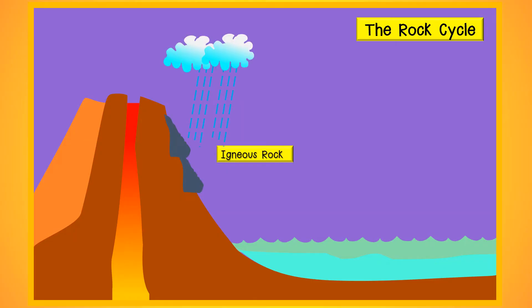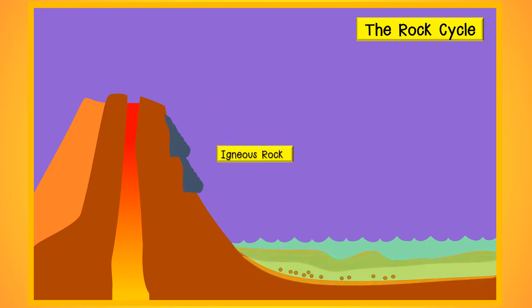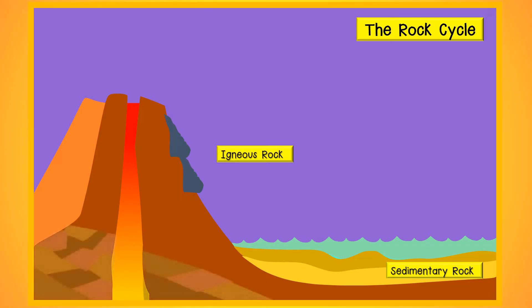The igneous rock is eroded into smaller parts through water and wind erosion. The smaller parts fall into oceans and rivers. Over time, different layers of rock create sediments that harden due to heat and pressure, forming sedimentary rock. Meanwhile, other igneous rock exposed to more heat and pressure under the Earth's surface changes into metamorphic rock. These processes take many millions of years to occur.